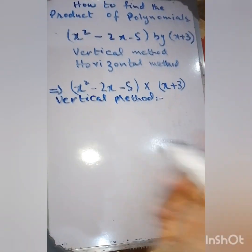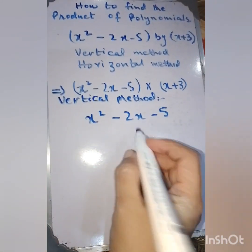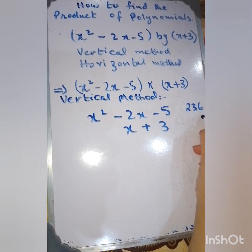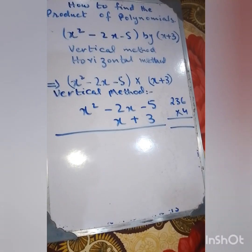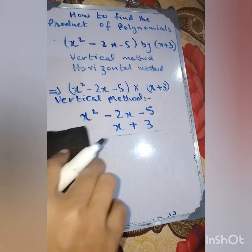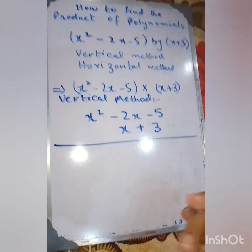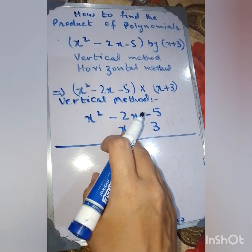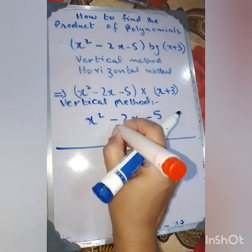That is our answer with the horizontal method. Now we do the same question with the vertical method. We write x squared minus 2x minus 5 on top, then x plus 3 below it — just like we stack numbers when multiplying, for example 23 multiplied by 4. It is not a new concept; it is simple algebra applied vertically.